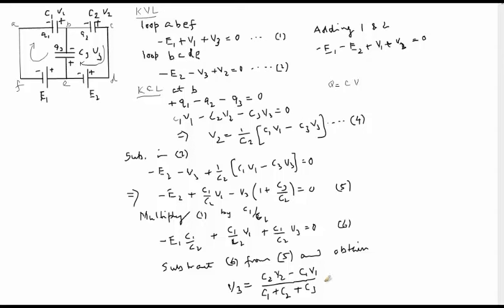And we can easily find that the value of V3 will be C2 E2 minus C1 E1 divided by C1 plus C2 plus C3. So if I have obtained V3 then charge on C3 can be easily found out because again we use Q is equal to C times V. So the voltage is this and the value of C will be C3. So Q3 will be equal to C3 multiplied by (C2 E2 minus C1 E1) divided by (C1 plus C2 plus C3), and that is the answer. Thank you for watching.